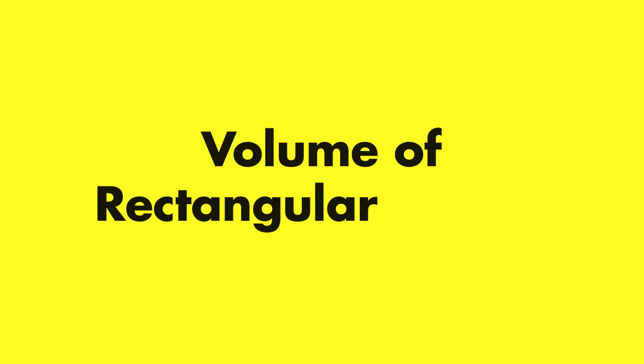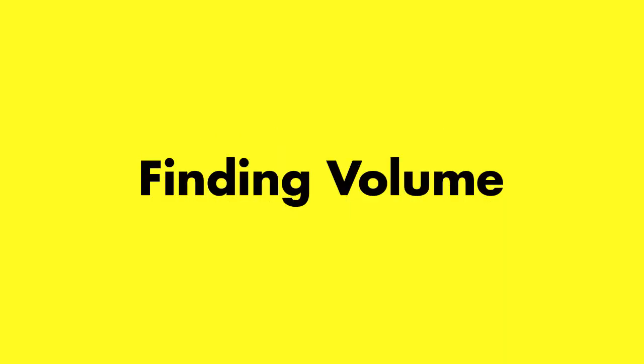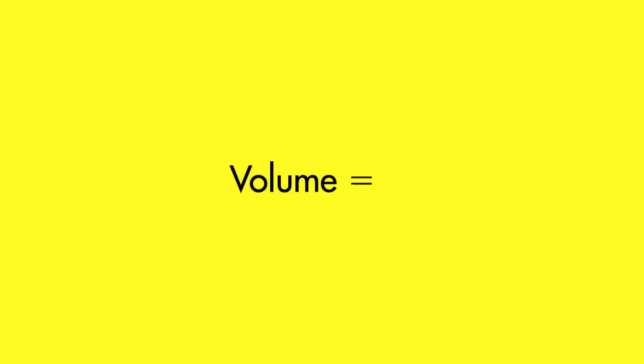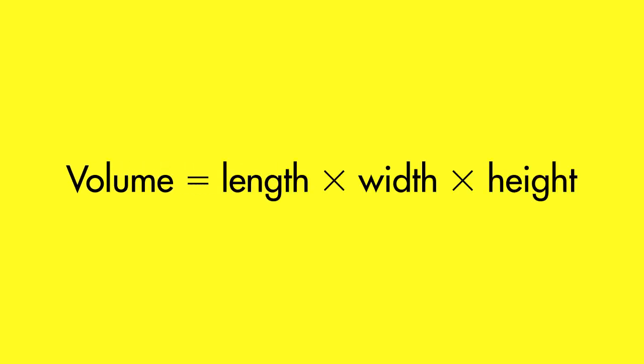Volume of Rectangular Prisms. The equation for finding the volume of a rectangular prism is length times width times height.